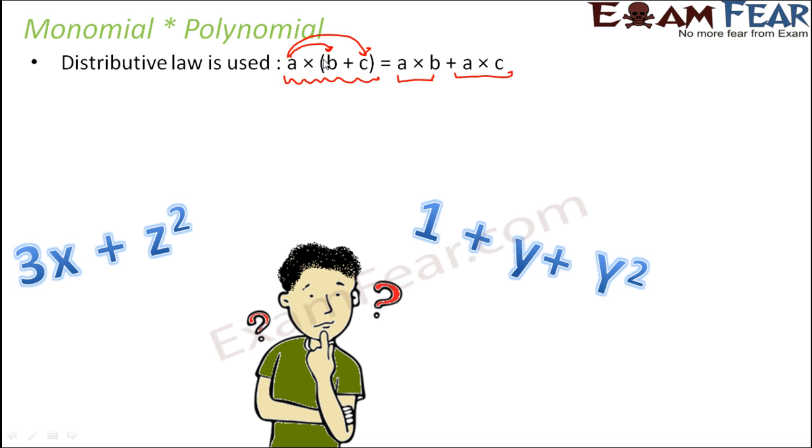Because a gets multiplied to both b and c separately and then the product gets added. So this is the distributive law. Now you see how beautifully we will make use of this distributive law whenever we have to multiply a monomial with a polynomial.